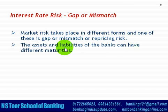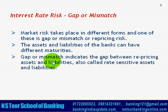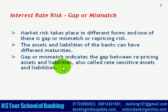We must appreciate that assets and liabilities of banks will have different maturities. Gap or Mismatch indicates the gap between the repricing assets and liabilities, which are also called Rate Sensitive Assets and Liabilities.